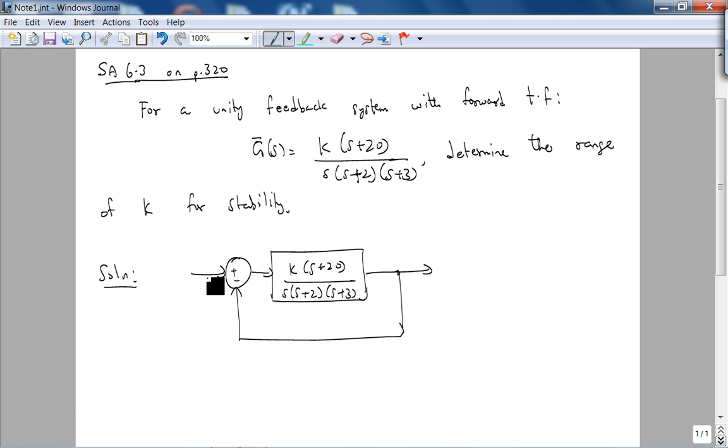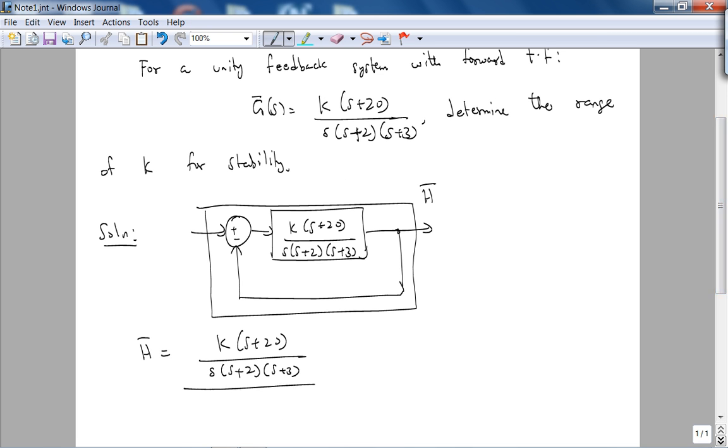So our h, so if you call this h bar, h is basically g over 1 plus g, and you can see, we basically have a third order polynomial.